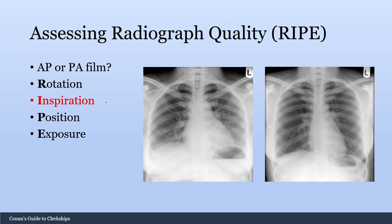Next is I for inspiration. You want to check that the patient took a deep breath for their x-ray, defined as being able to see 9 to 10 ribs on the film. If the patient doesn't take a good inspiration, the lung fields will be compressed, which can make things appear more congested, hide certain findings, and compress the heart to create a false appearance of cardiomegaly. The left film shows a poor inspiration compared to the right film, which shows a good inspiration.